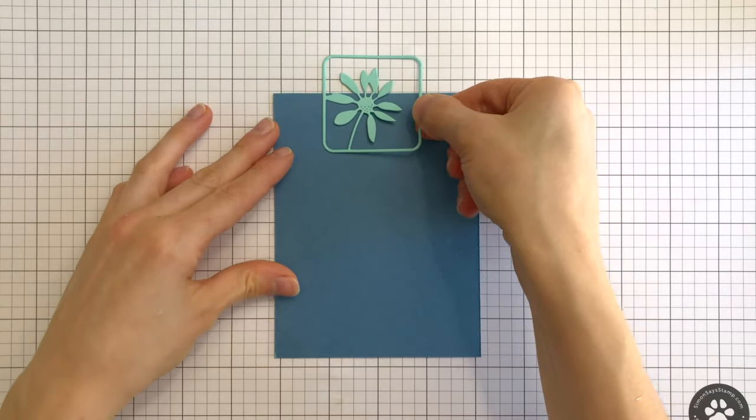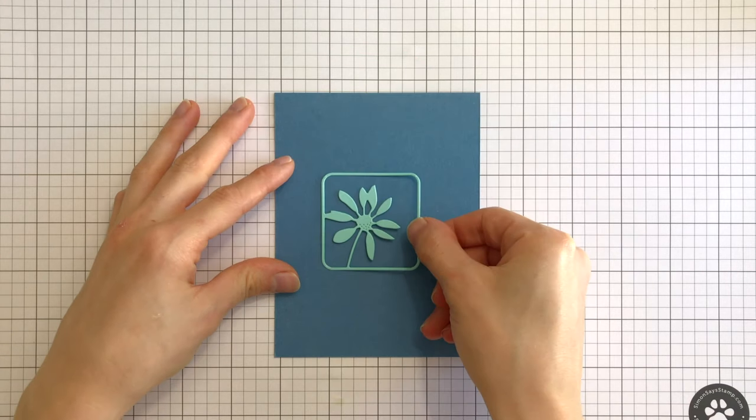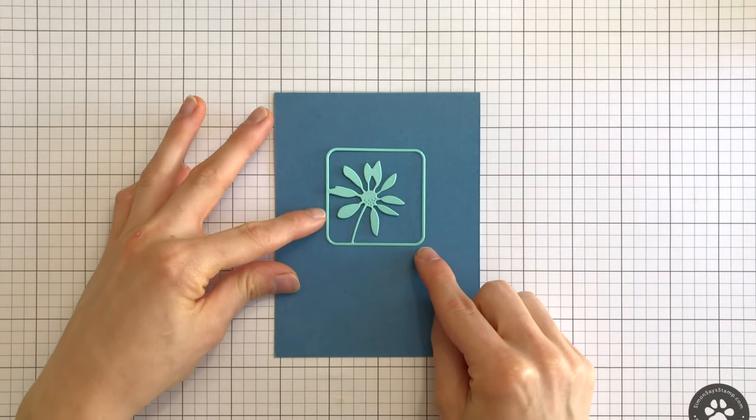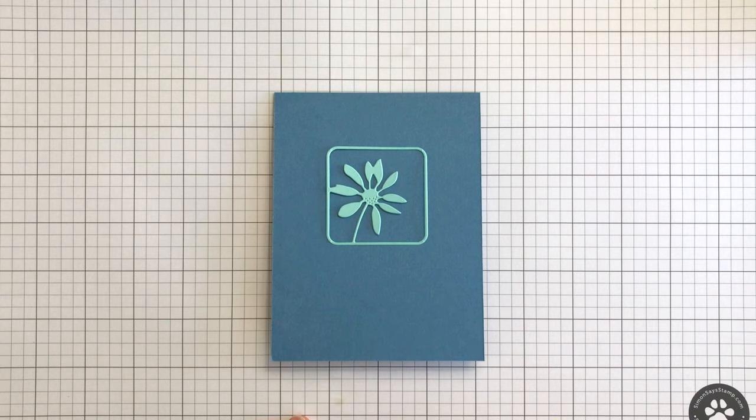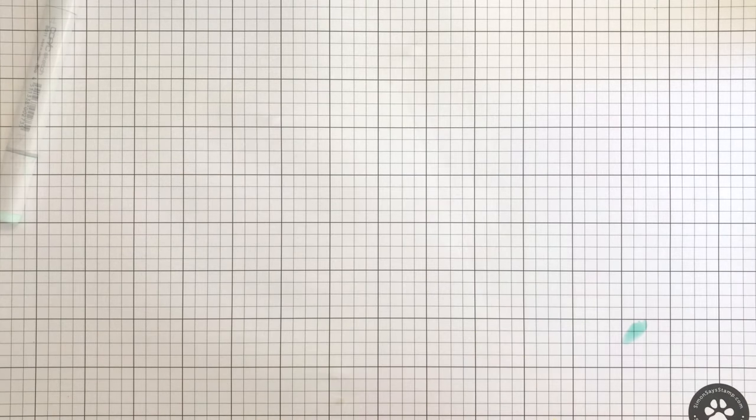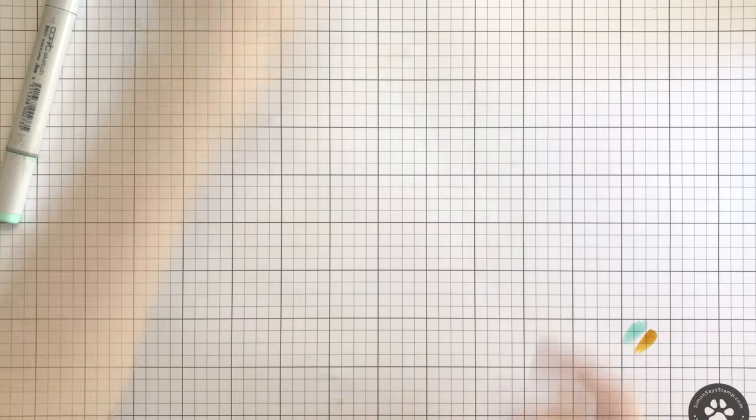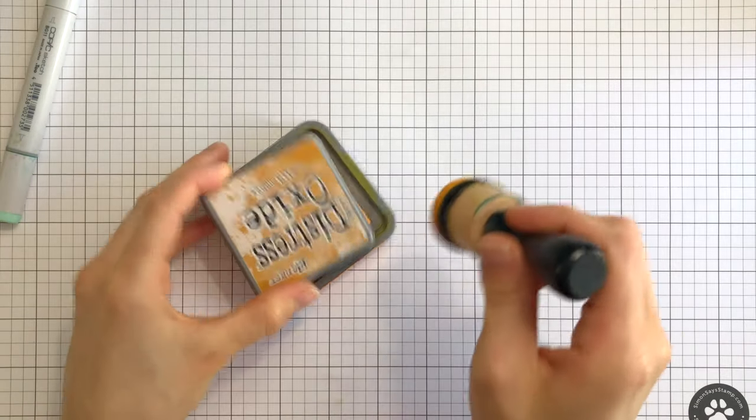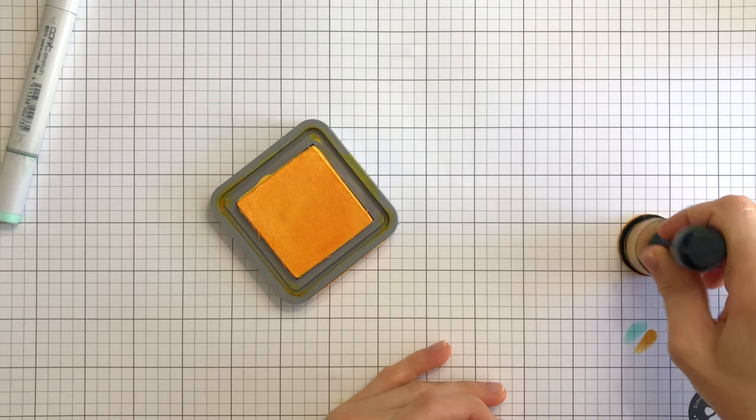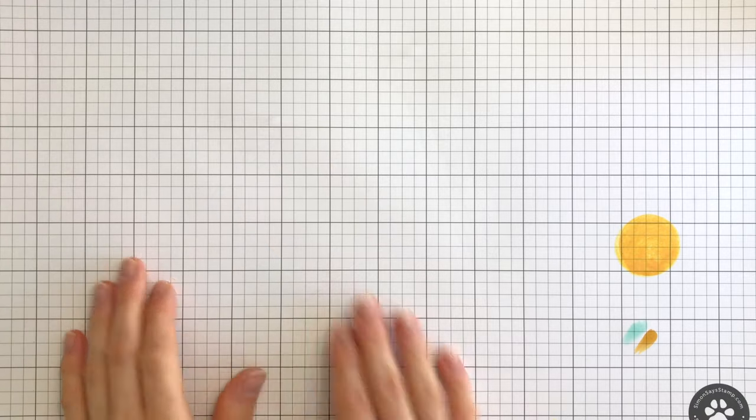This grid paper is the perfect background for stamping and assembling your projects, since the grid lines will help you make sure everything is aligned perfectly. The bright white color is also handy for testing out ink or marker colors before putting them directly on your project. And, because it's a pad of paper, you can easily take it with you on the go.